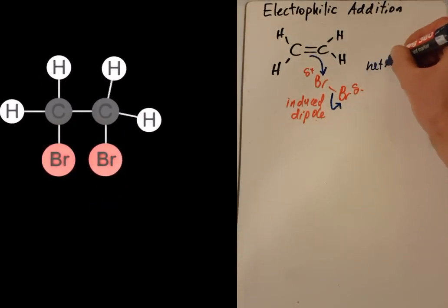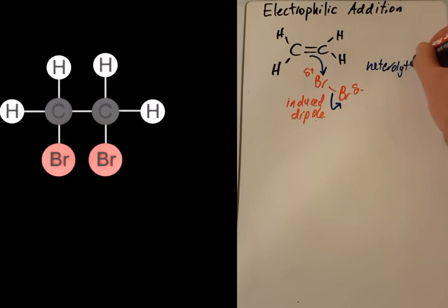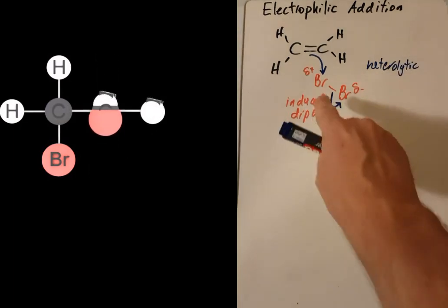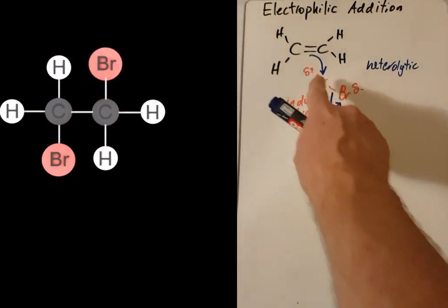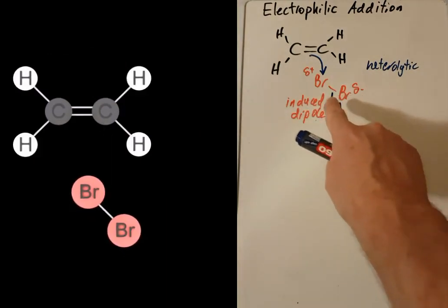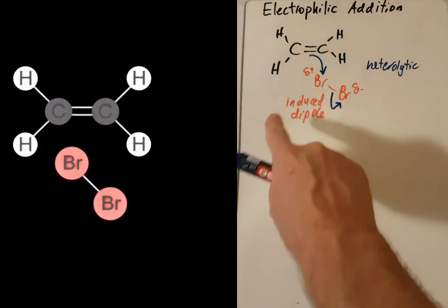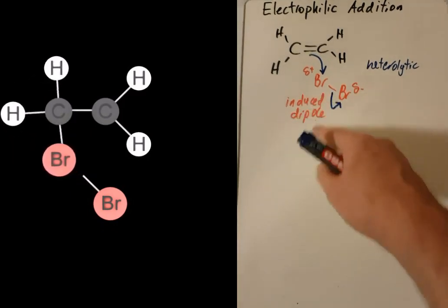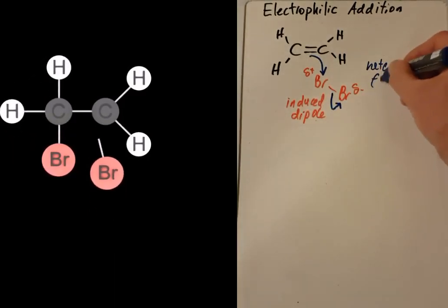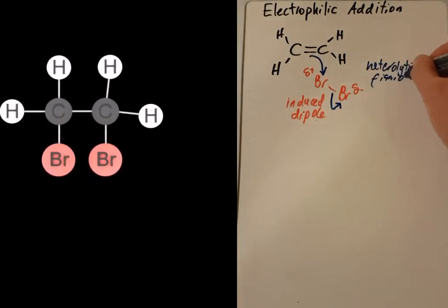It's a heterolytic. Since the electrons are being split unevenly, effectively making this Br minus and that Br plus. Another word for splitting is fission. So this is heterolytic fission.